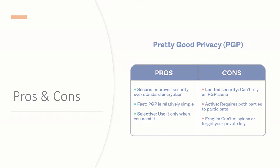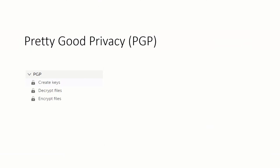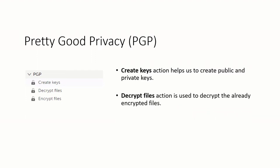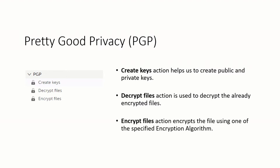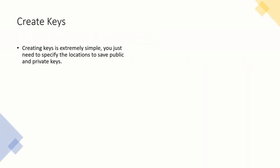In Automation Anywhere A360, we have the PGP package with three different actions: Create Keys, Decrypt Files, and Encrypt Files. Create Keys helps you create public and private keys. Decrypt Files is used to decrypt already encrypted files. Encrypt File encrypts a file using one of the available encryption algorithms. We'll see all of these in the demo.